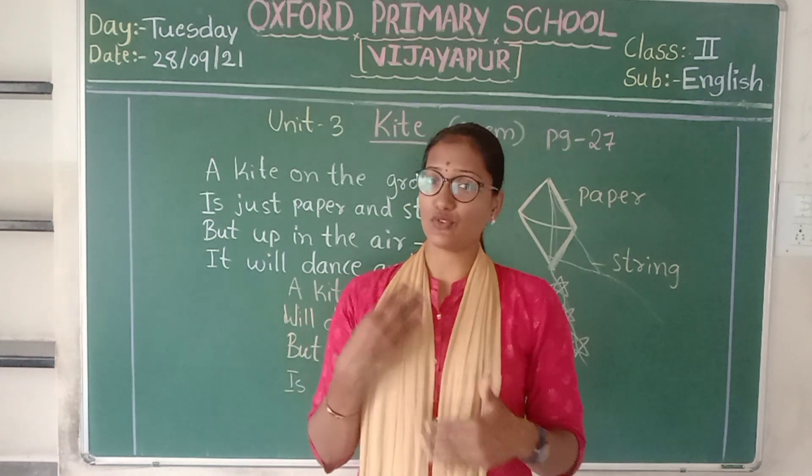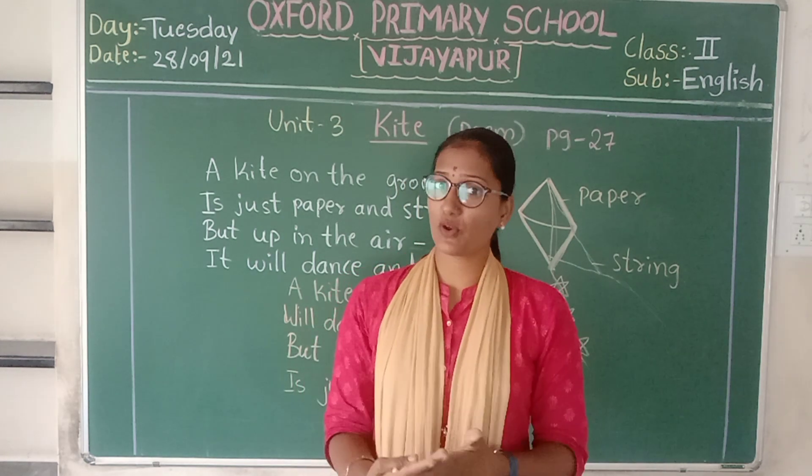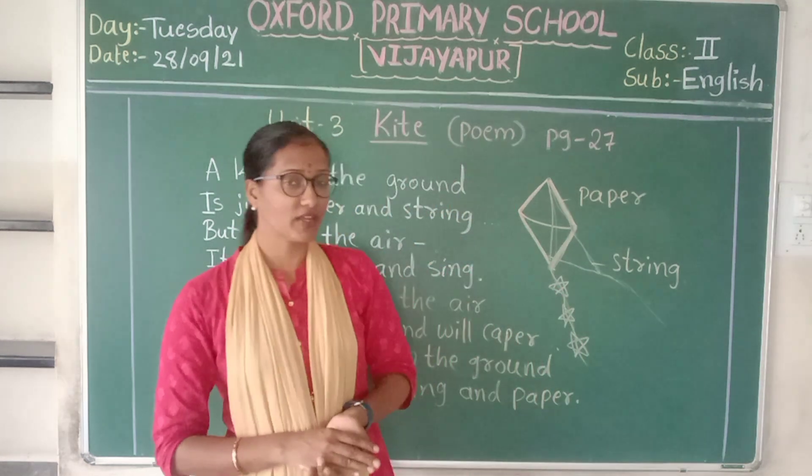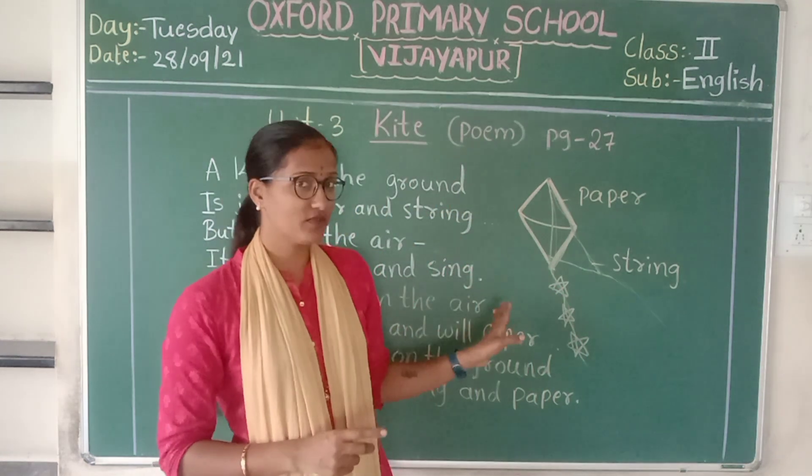So this is all about the poem: 'A kite on the ground is just paper and string. But up in the air it will dance and sing. A kite in the air will dance and will capel. But back on the ground is just string and paper.' You have to recite this poem — you have to learn it by heart.